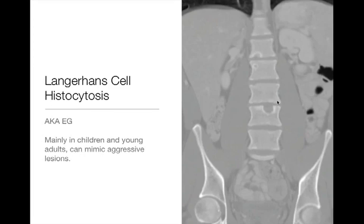Langerhans cell histiocytosis, or EG, is another rare condition, seen in children or young adults — you would not mention this in the differential for older adults, as it just doesn't really occur. Think about it when you have a patient in the right age range with multiple lytic lesions, as seen here with multiple lesions in vertebral bodies and throughout the skeletal system. Sometimes EG can look very aggressive and mimic something like lymphoma or other more aggressive processes.